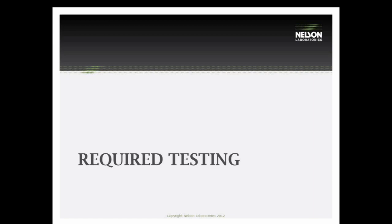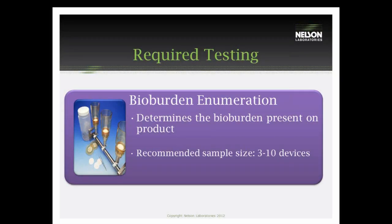There is a lot of required testing, and we'll go over that now and when that testing is to take place. Prior to the half cycle, we will run bioburden enumeration. That testing is going to classify and give us numbers for the bioburden that's present on the device prior to sterilization. This information is important to make sure that we have a cycle adequate to kill the natural bioburden during the half cycle.